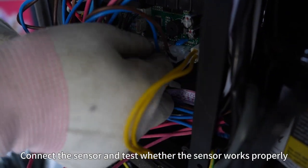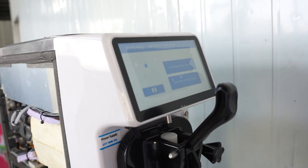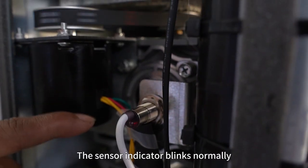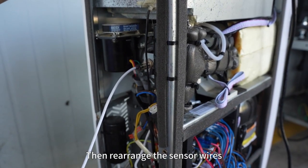Connect the sensor and test whether the sensor works properly. The machine did not alarm - the sensor indicator blinks normally. Then rearrange the sensor wires.